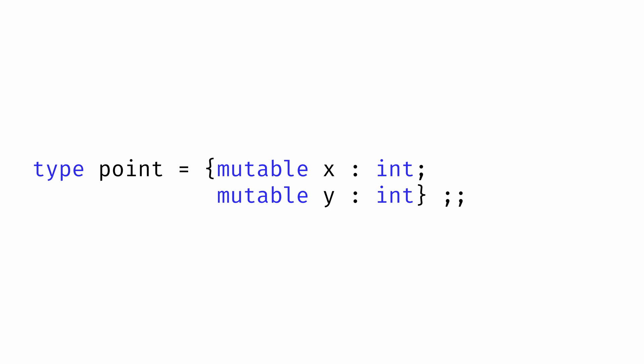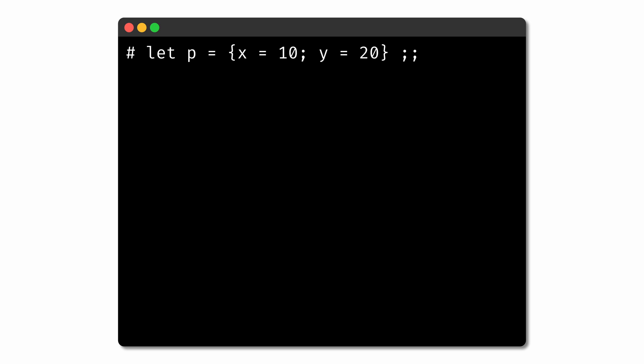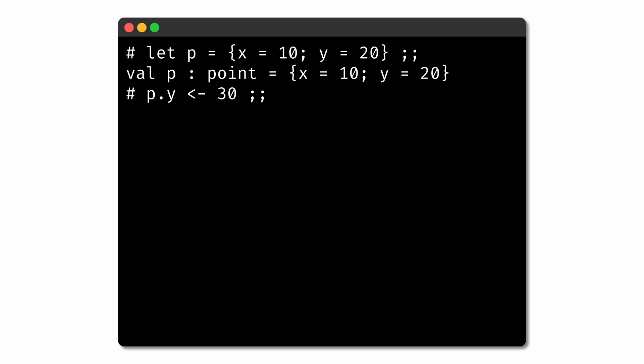Here's a mutable record where both the x and y fields are mutable. Now we can use the left arrow operator to update a mutable record. So if we have a point whose x value is 10 and whose y value is 20, we now have the ability to update those fields. We can update the y value using the update operator and set the y value to 30. Now the record stores an x value of 10 and a y value of 30.